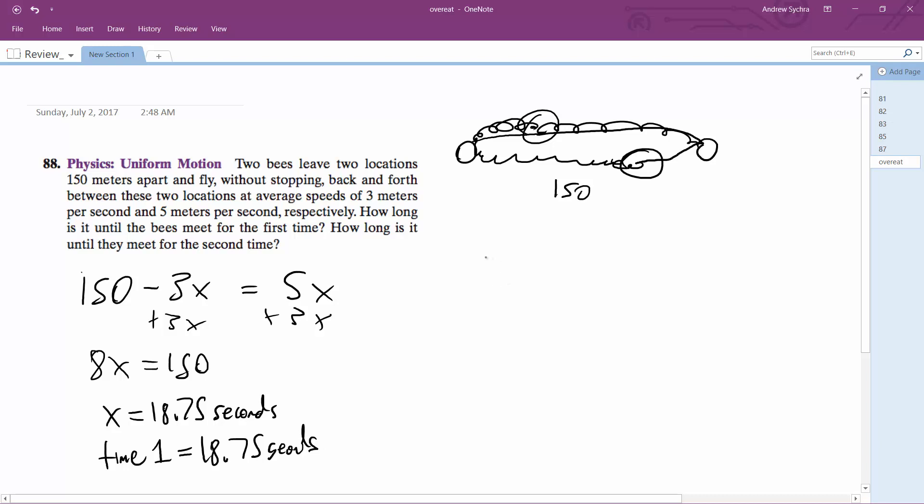Okay, so how do we find the next one? I need to calculate the full time it takes for time 2 for the 3 meter bee to get to the other end. So 150 divided by 3 is equal to 50 seconds.